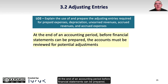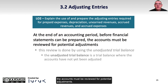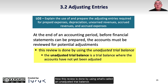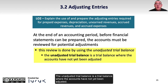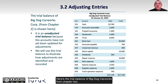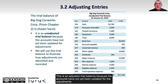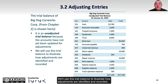At the end of an accounting period, before financial statements can be prepared, the accounts must be reviewed for potential adjustments. This review is done using what's called an unadjusted trial balance — a trial balance where the accounts have not yet been adjusted. Here's the trial balance of Big Dog Car Works from Chapter 2, which we'll use to illustrate how adjustments are identified and recorded.